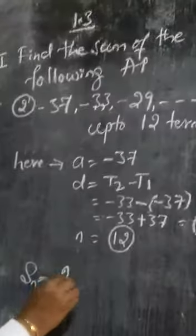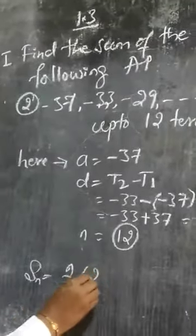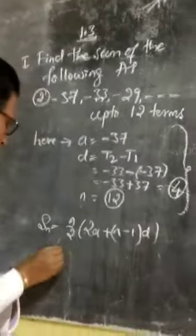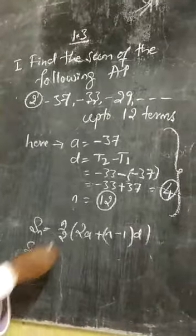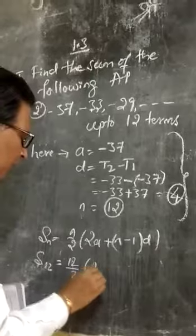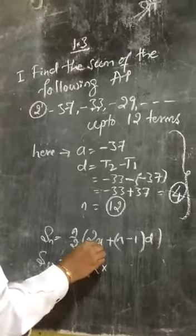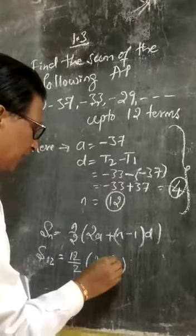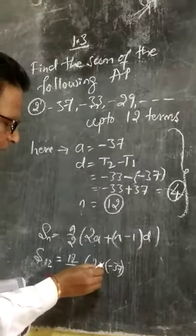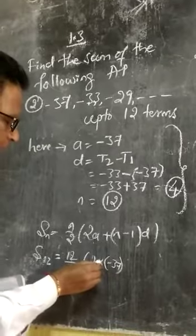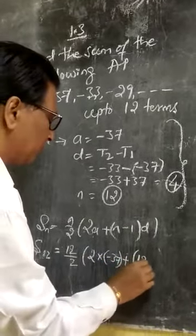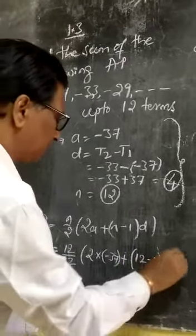So, SN is equal to N upon 2 into bracket 2A plus N minus 1 D. So, 12 because N is here 12. 12 upon 2 into bracket 2 into A is here minus 37. I will write the minus 37 in the bracket because you are getting confusion. Plus N is here 12 minus 1, D is here 4. So, simplify.